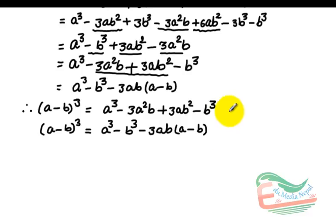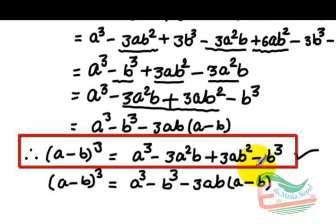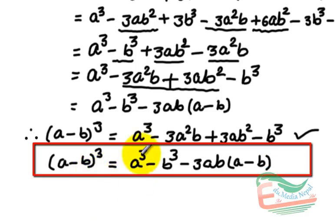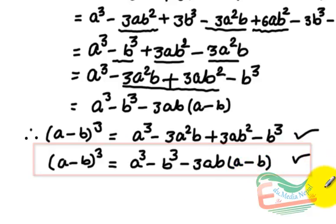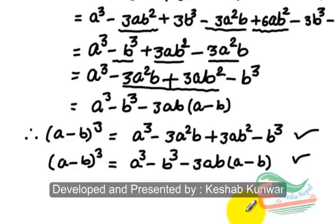So students, I hope you understood. A minus b whole cube equals a cube minus 3a square b plus 3ab square minus b cube. Or, a minus b whole cube equals a cube minus b cube minus 3ab times a minus b. While using this formula, just remember that the values of a, b, or a minus b used here are supposed as dimensions of a cube or cuboid.